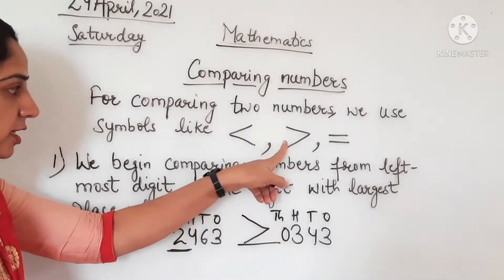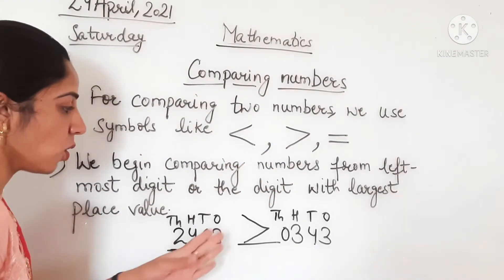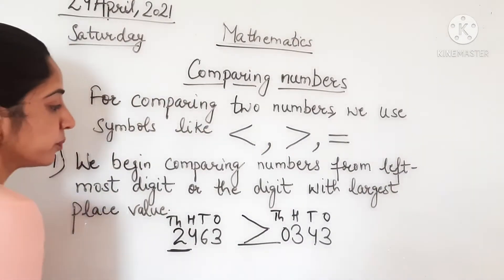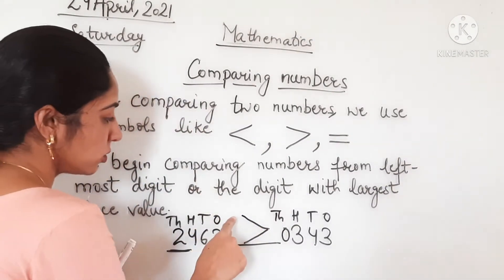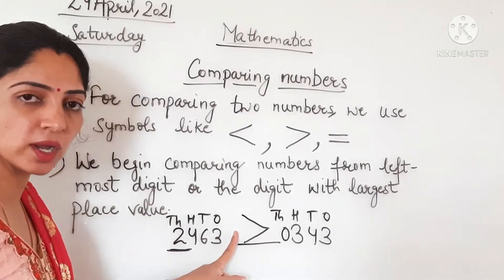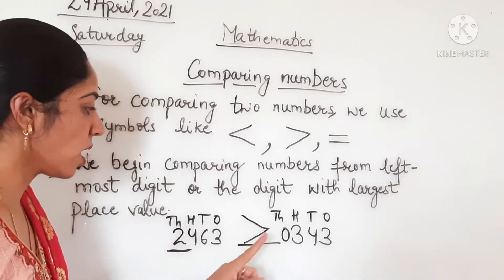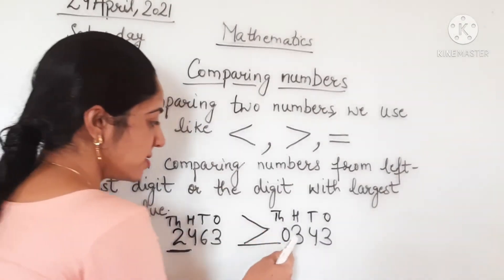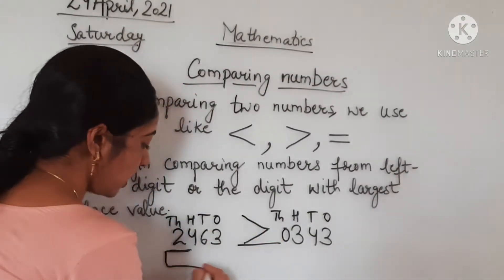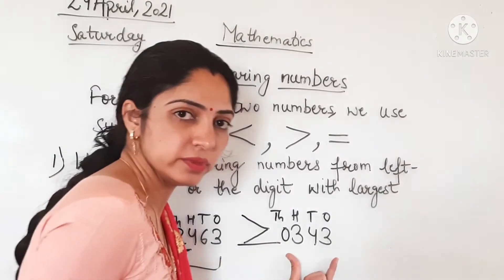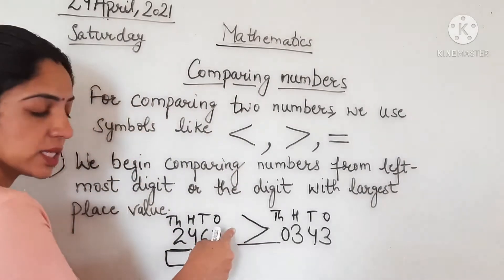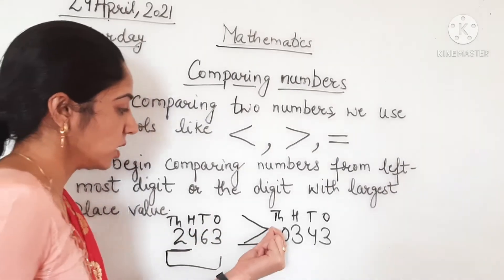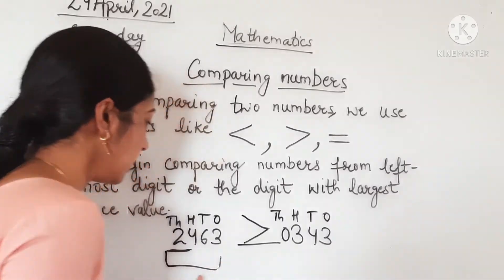The greater than symbol: the mouth of the symbol opens toward the largest number and closes toward the smallest number. So whichever side the largest or biggest number is on, that is the open side, and the smallest number side is the closed side.